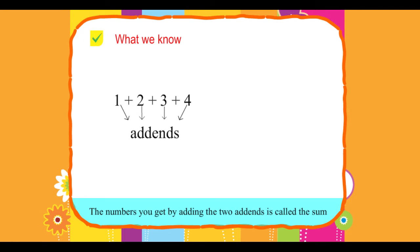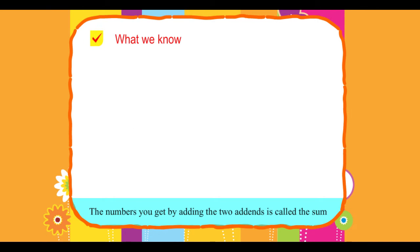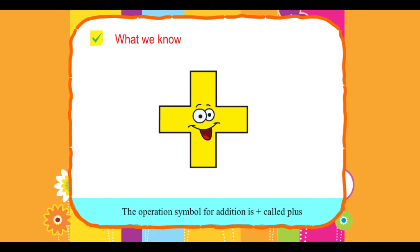The number you get by adding the two addends is called the sum. The operation symbol for addition is called plus.